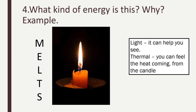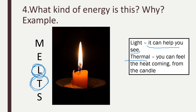What kind of energy is this? Why? If I see this candle, I can see two different kinds of energy being demonstrated. The candle is demonstrating light energy, because when I light the candle it helps me see in the dark. But also the other type of energy is thermal energy — I can feel the heat coming from the candle, and the wax from the candle is melting. So the evidence is light because I can see in the dark, and thermal because the wax is melting.